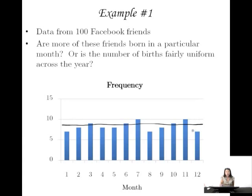Other uniform distributions also look like this sort of rectangle or flat shape. These distributions might be anything from deaths occurring on days of the week, or rolls of a six-sided die — is there a particular reason to believe that one side might come up more frequently than another? Not if it's a fair die.